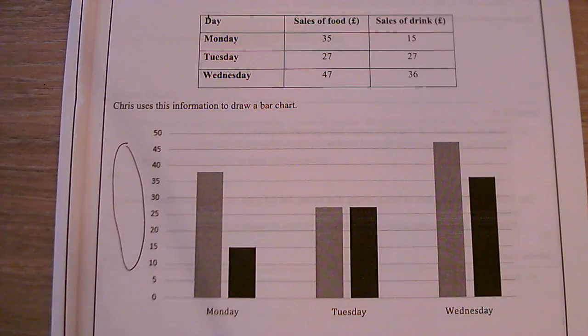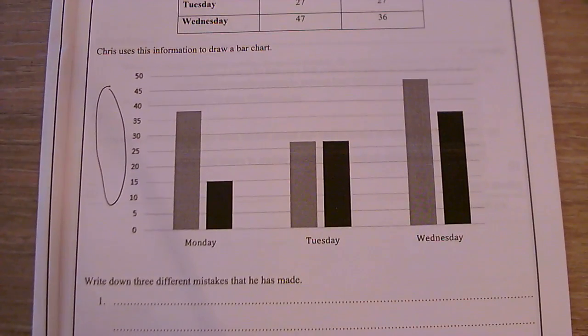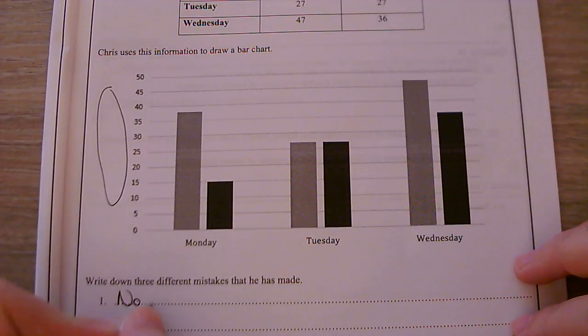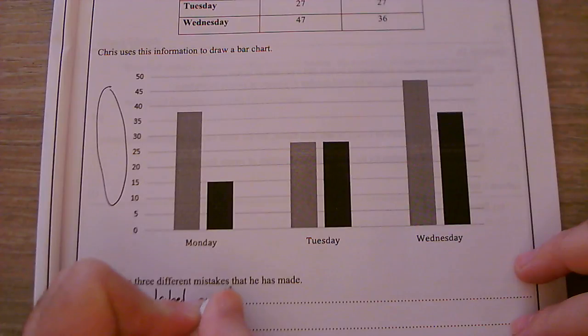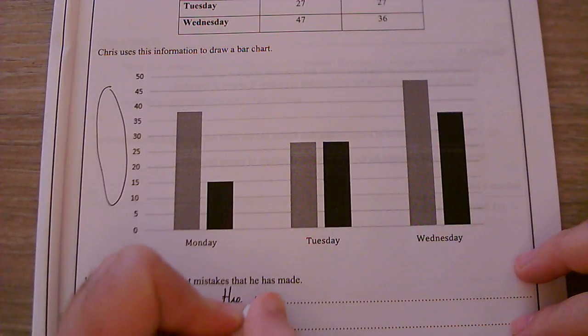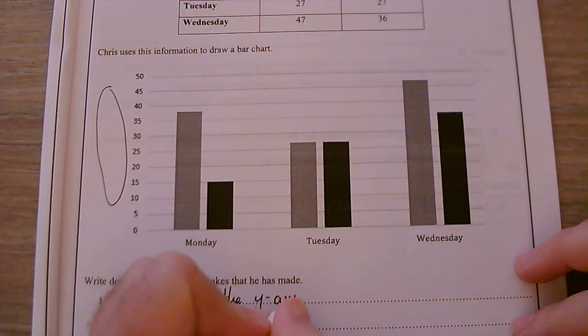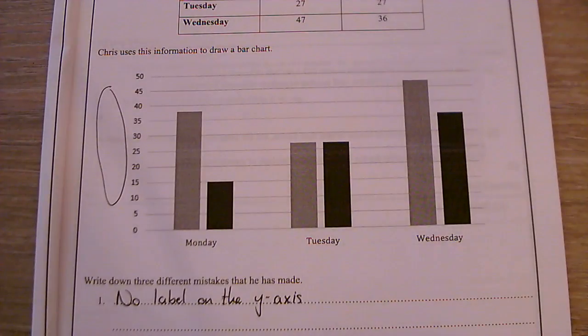So my first mistake is there is no label on the y-axis. So it is not very clear.